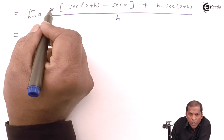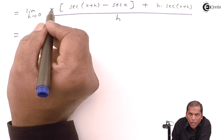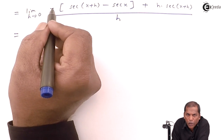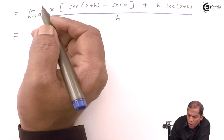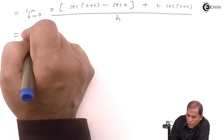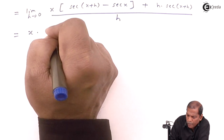Now here x is a constant — the limit totally depends on h — so we take x outside the limit.